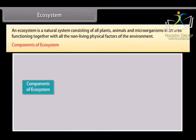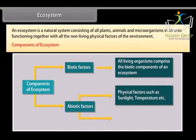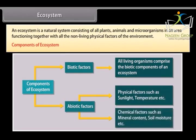An ecosystem comprises two components: (1) Biotic factors, including all living organisms, and (2) Abiotic factors, which include physical factors such as sunlight and temperature, and chemical factors such as mineral content, soil moisture, etc.